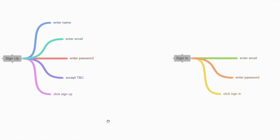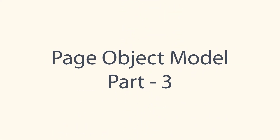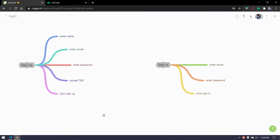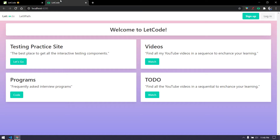In our previous video we learned how to write all the elements from the signup page in our signup class. Today we are going to continue with the sign-in page. In the sign-in page we have three fields: email, password, and the sign-in button.